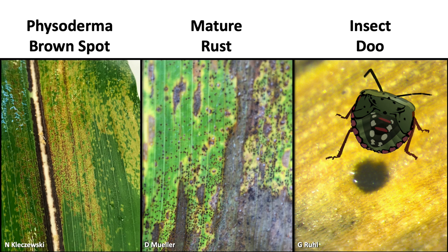Common rust and southern rust can also look a lot like tar spot, especially later in the season. As those pathogens age, they start to produce a spore-bearing structure that's black. Those structures are going to look like little peppercorns on your leaves. They typically will be on the underside or opposite side of where the red or orange pustules were during the growing season, and they're all typically the same size — not elongated or anything like that.